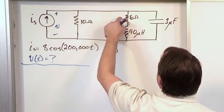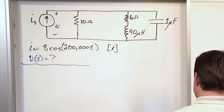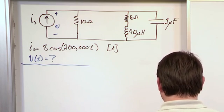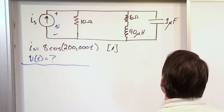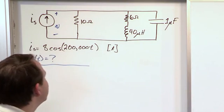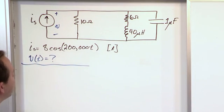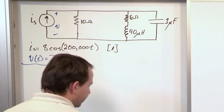Now we have a 10 ohm resistor, a 6 ohm resistor, a 40 micro henry inductor, and we have a 1 micro farad capacitor there. So again, think about what would you do if it were just resistors and then just go that direction. That's really all you have to do.